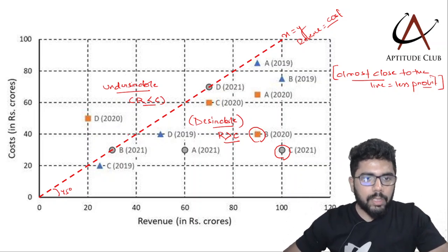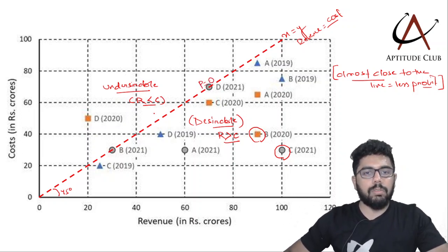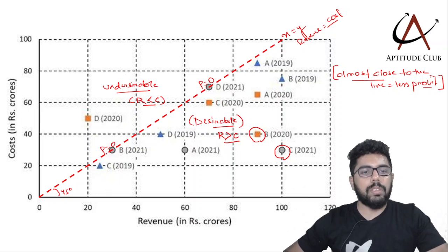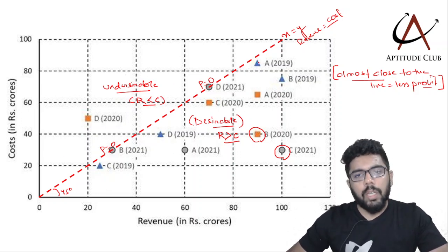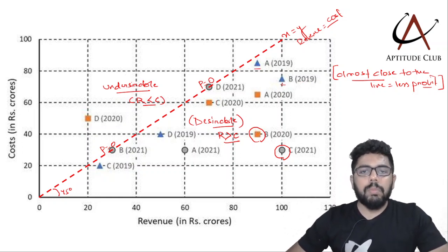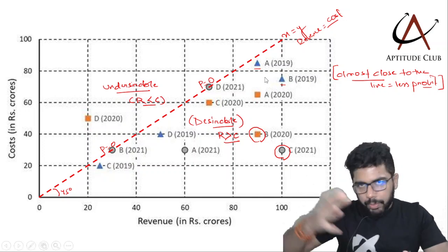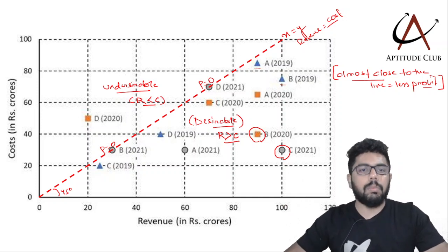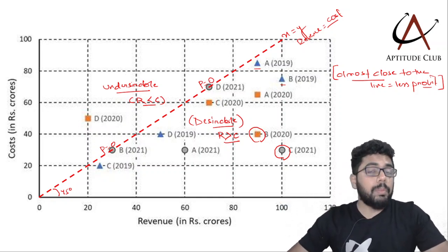If a point lies exactly on the line, profit is zero because revenue equals cost. Comparing A in 2019 and B in 2019, B will have more profit than A since B is farther from the line. So the more a point is away from the line on the right side, the more profitable the company. If the question doesn't require exact figures, we can interpret the graph this way.